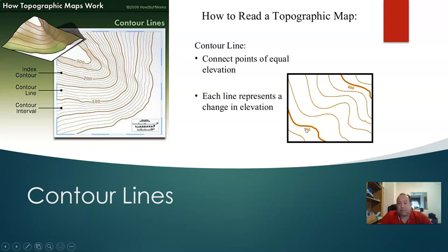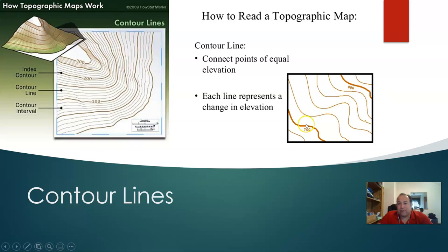With 5 lines between 700 and 800, that's 100 feet of elevation in 5 lines, and 100 divided by 5 gives me 20. So the contour interval for this map on the right is 20 — meaning 720, 740, 760, 780, 800. Anywhere along this line is 720 feet in elevation, and anywhere along this other line is 760 feet in elevation.